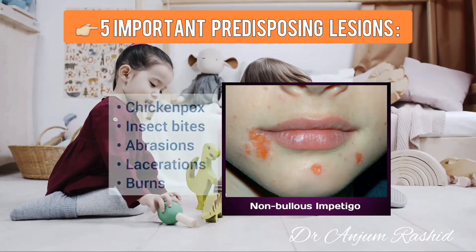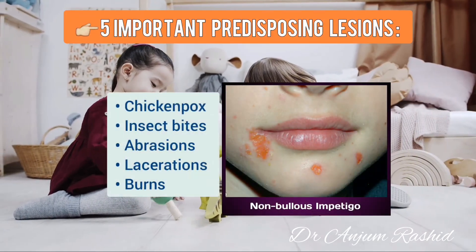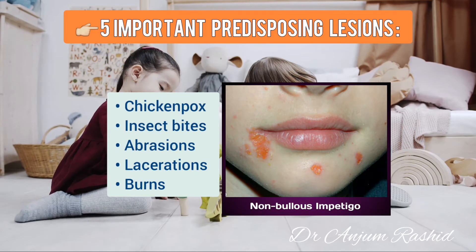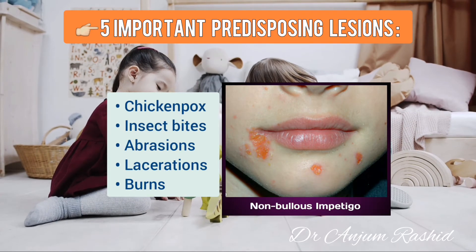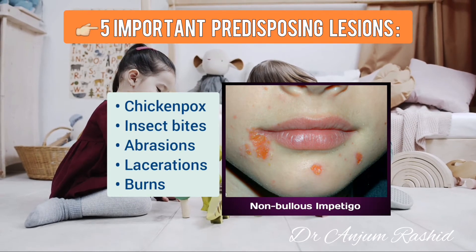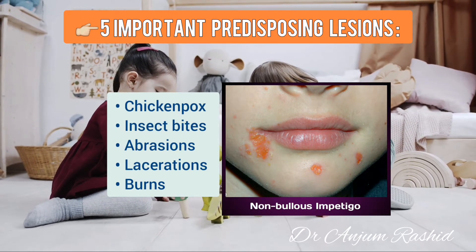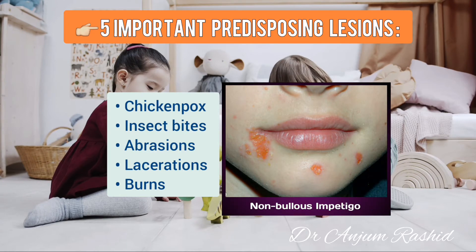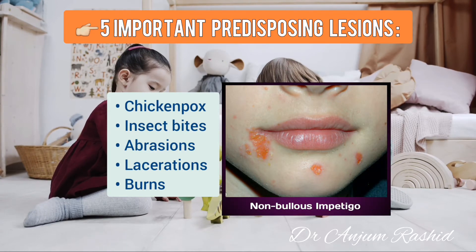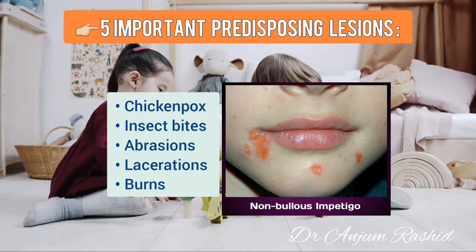Now five important predisposing factors of impetigo. These include chicken pox, insect bites, abrasion, lacerations, and burns.